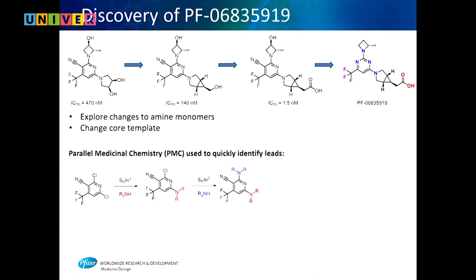As you functionalize further and further, compounds get better and better. The difference between this very potent compound and the other is they changed out a couple of things — put a nitrogen in and got rid of the alcohol — for permeability reasons. This was done very quickly through parallel chemistry.